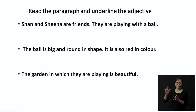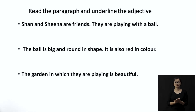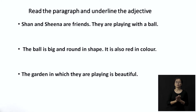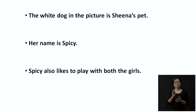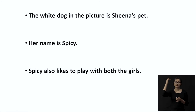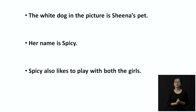The garden in which they are playing is beautiful. The garden is a name of a thing — it's a noun. And how is the garden? It is beautiful, so beautiful is your adjective. The white dog in the picture is Sheena's pet. Dog is the noun, and how is the dog? It is white — so white is your adjective.